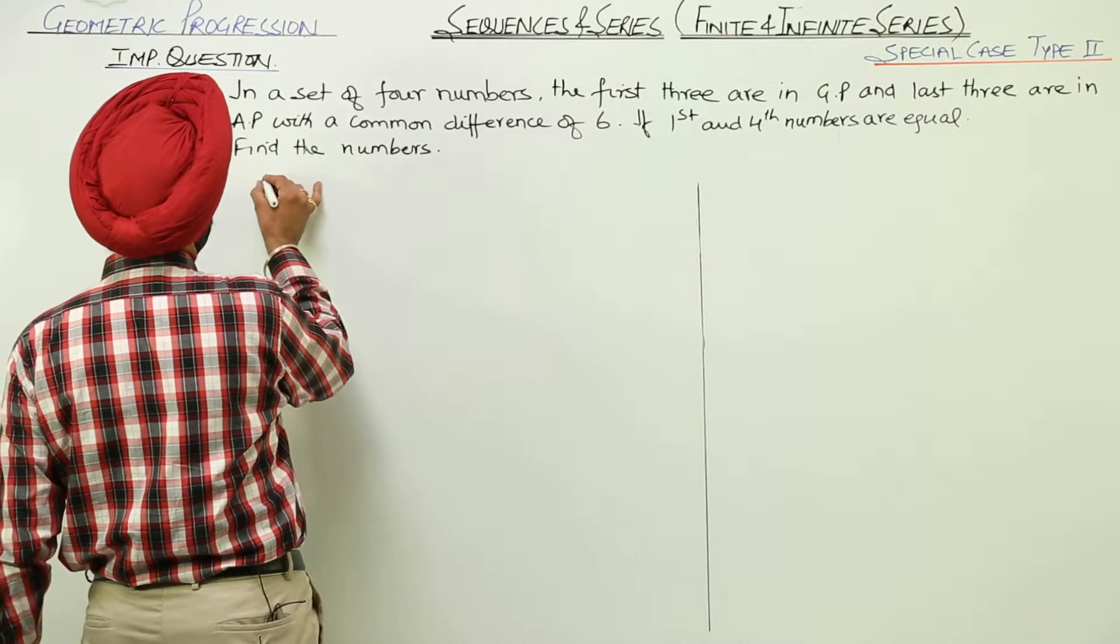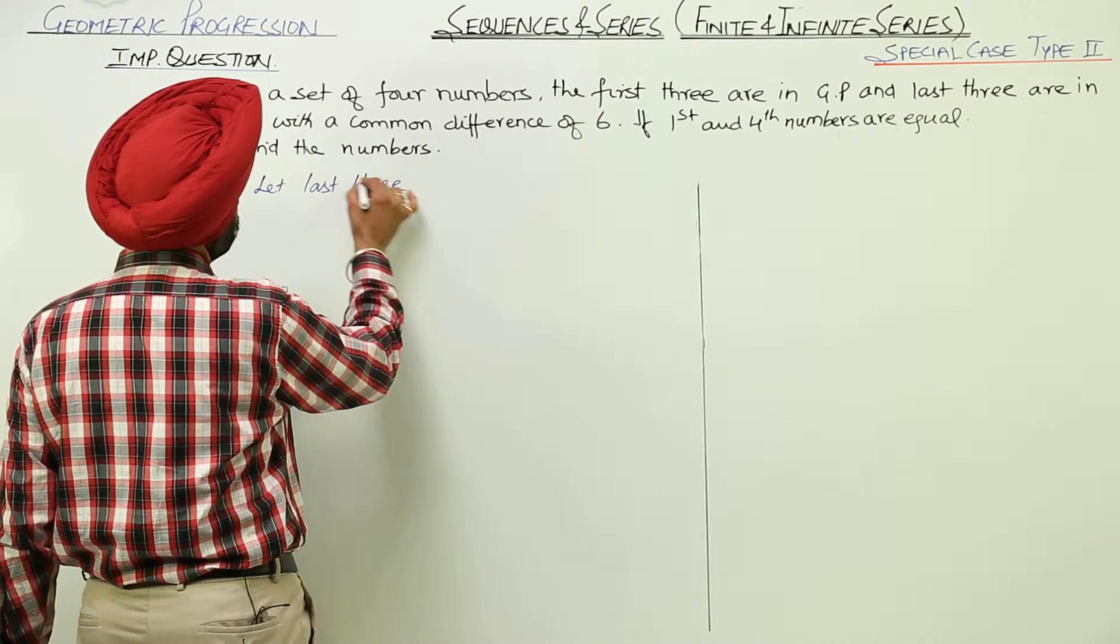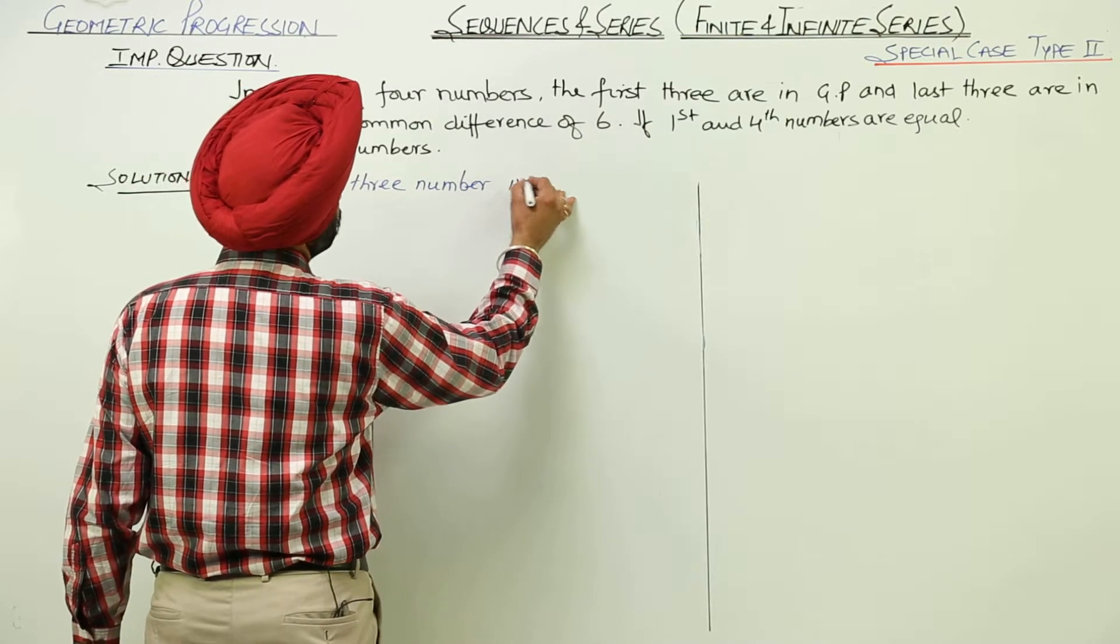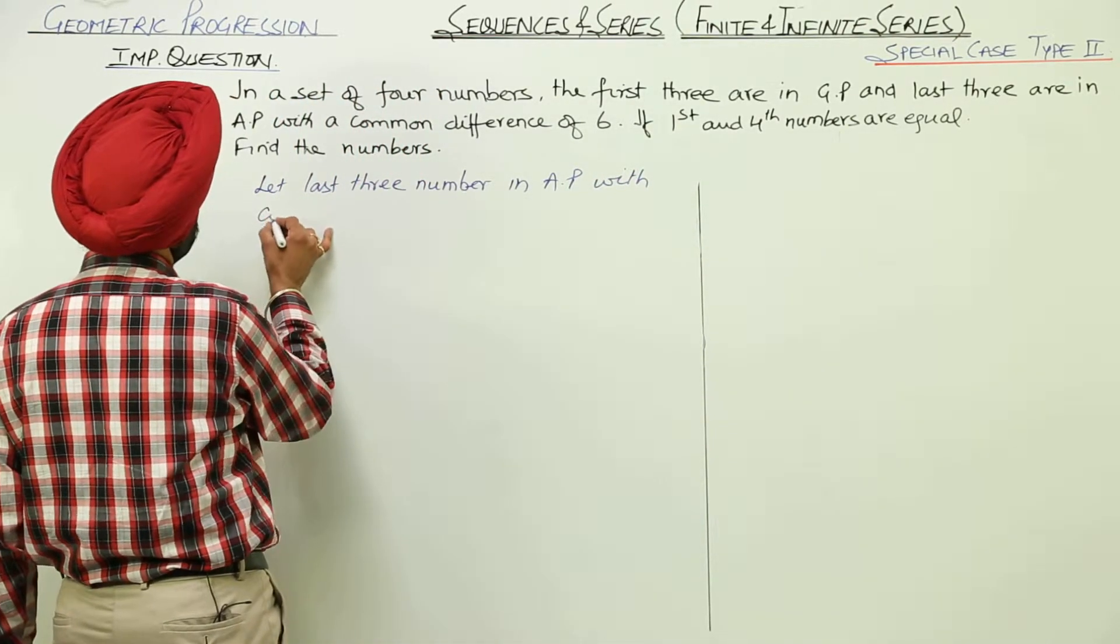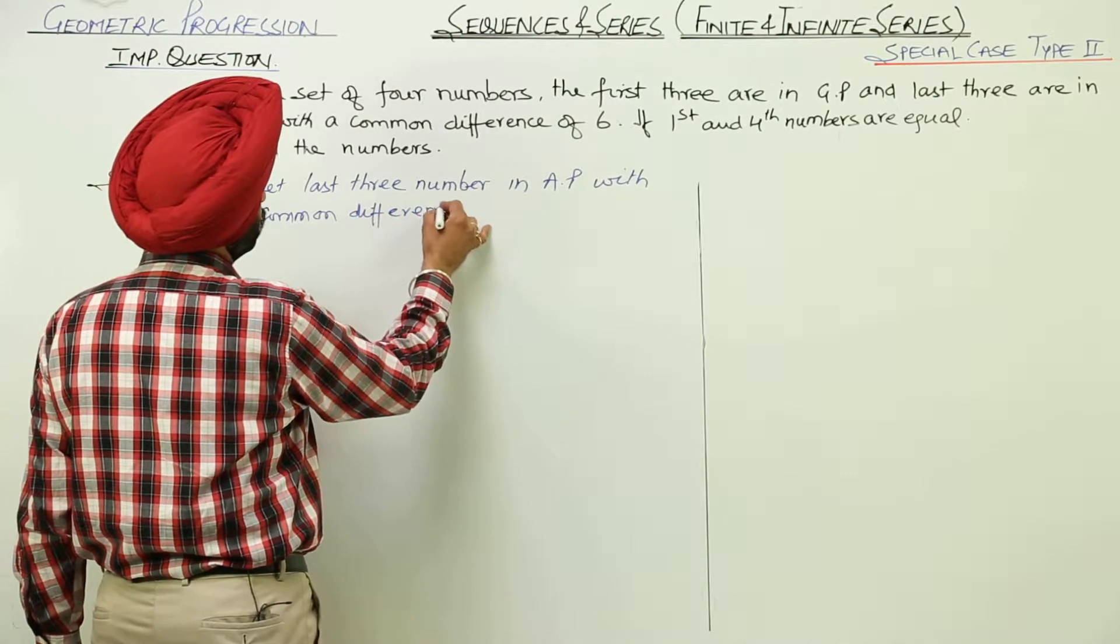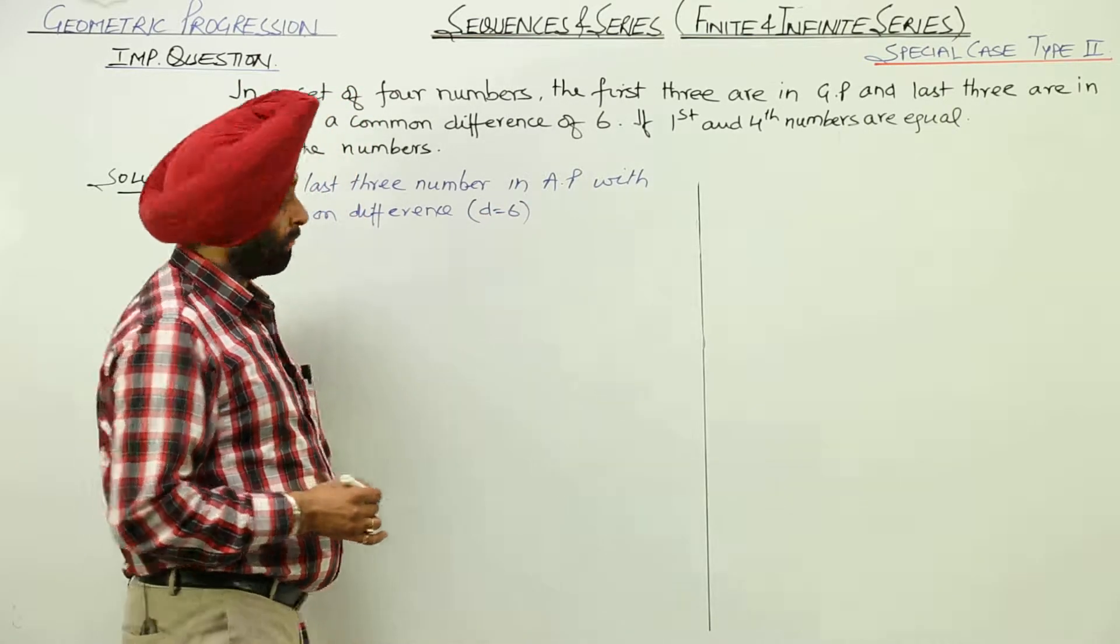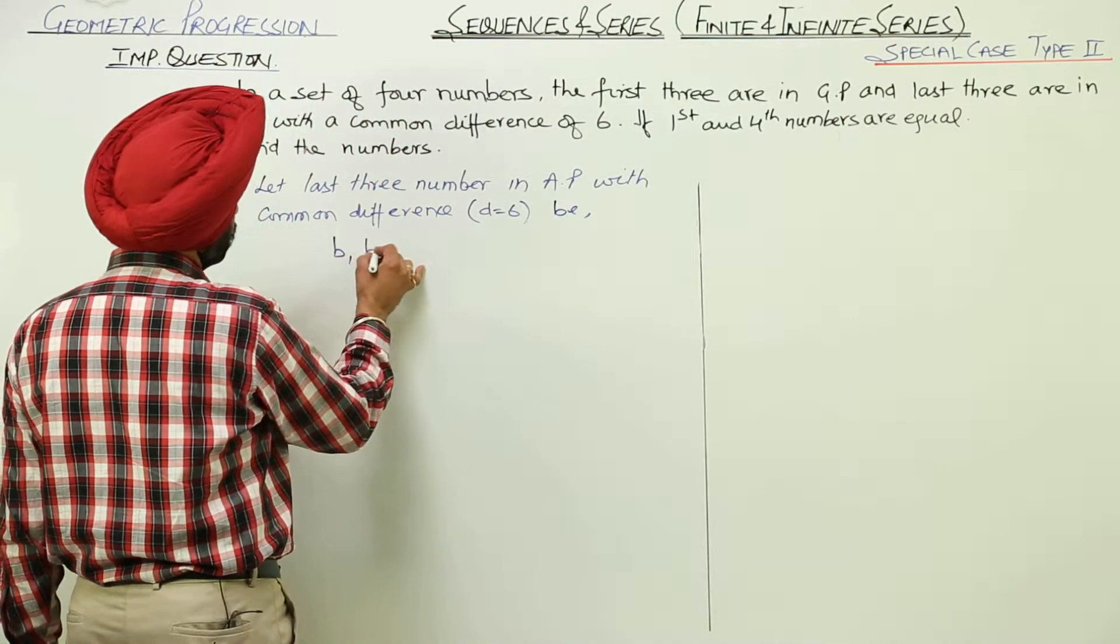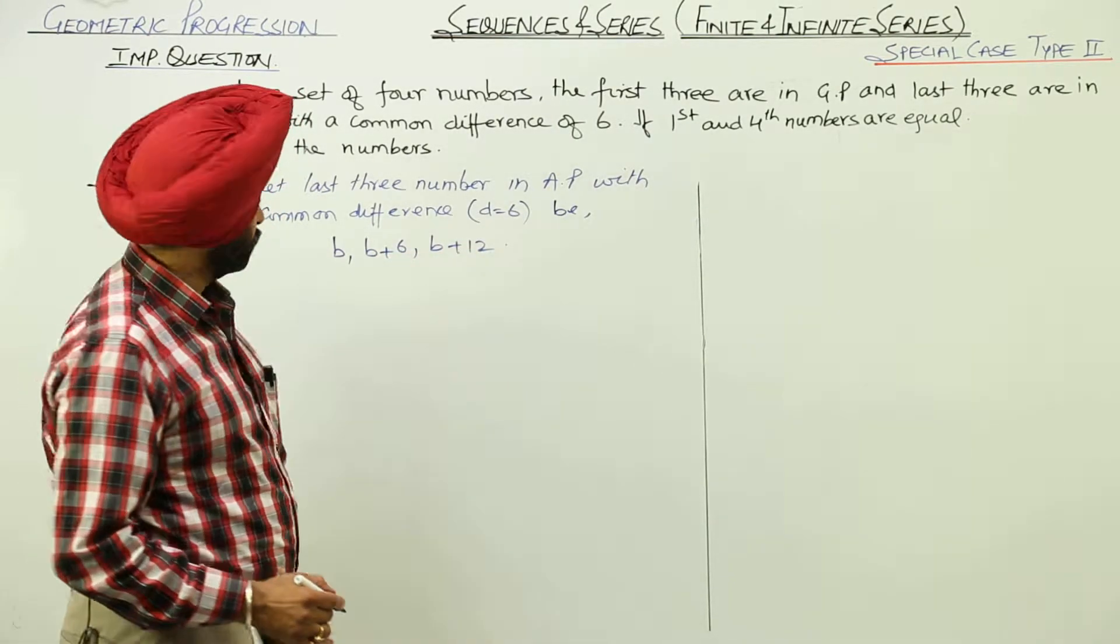Now, let last 3 numbers in AP with common difference 6. With common difference that is D is equal to 6, B, B plus 6 and B plus 12. Now these are the last 3 numbers.